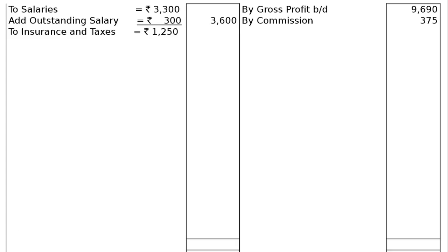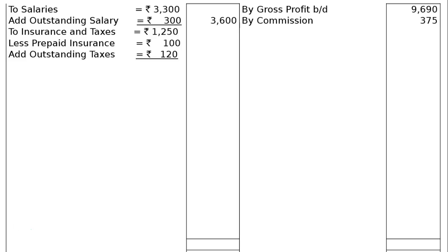Next is insurance and taxes. From the same adjustment, taxes of rupees 120 are outstanding — add outstanding taxes. From adjustment four, insurance amounting to rupees 100 is prepaid — less prepaid insurance rupees 100. Add outstanding taxes rupees 120.